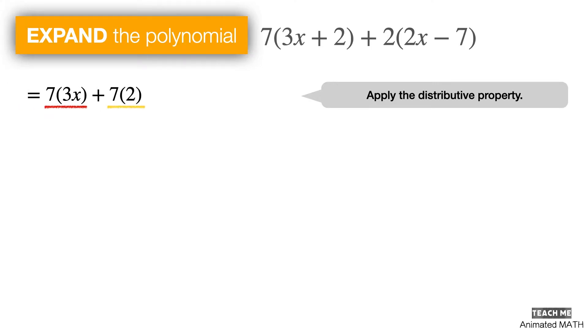So we multiply 7 to 3x and 2, and we multiply 2 to 2x and negative 7.